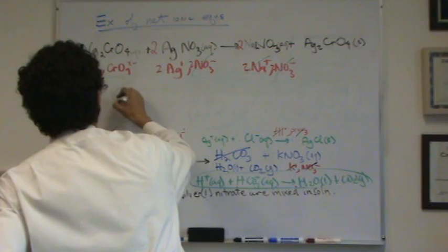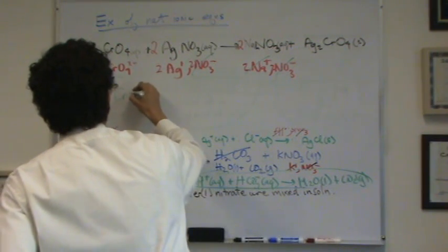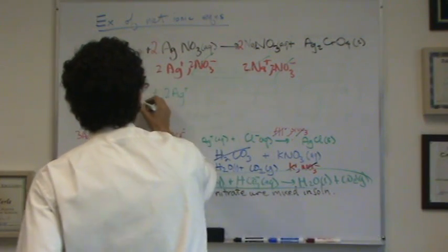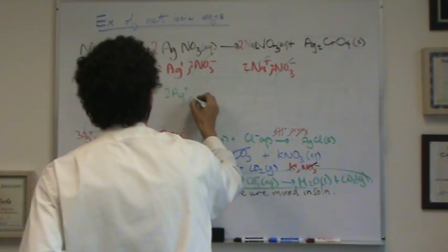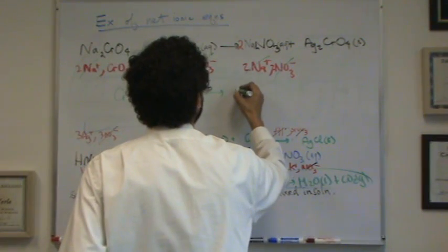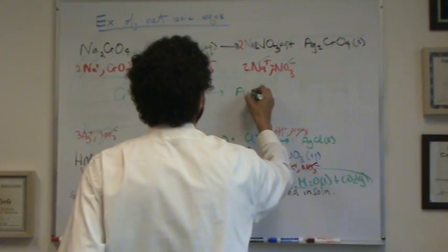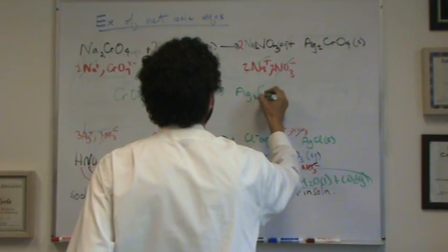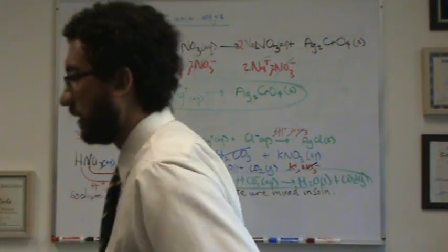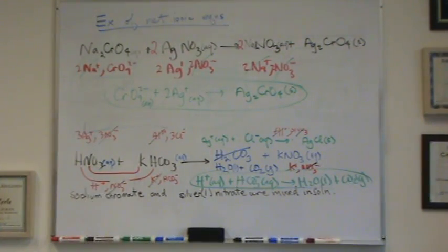I've got chromate ion plus two silver ions. They're both aqueous. Remember, ions are aqueous. Goes to Ag2CrO4, that's silver chromate, and there is my net ionic equation for the last one. Finally, that was a lot. And there is a lot. All right.